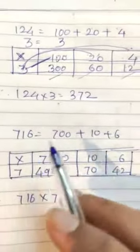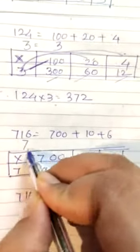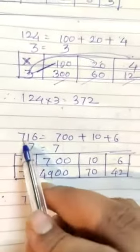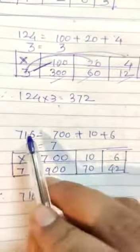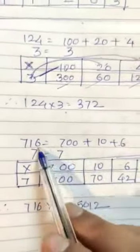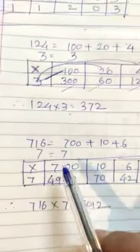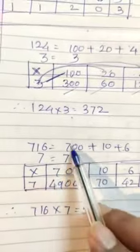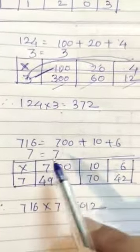Next, sixth number I have solved. 716. 716, 700 plus 10 plus 6. And 7 expanded form is 7 only. So now first into sign. 700, 10, 6. And 7 is here.